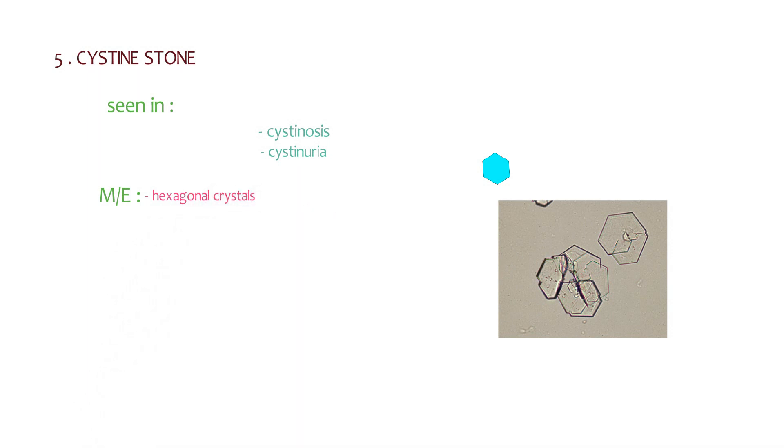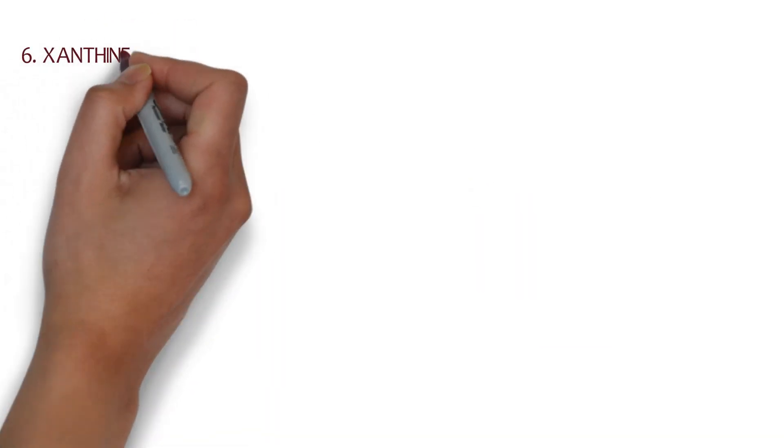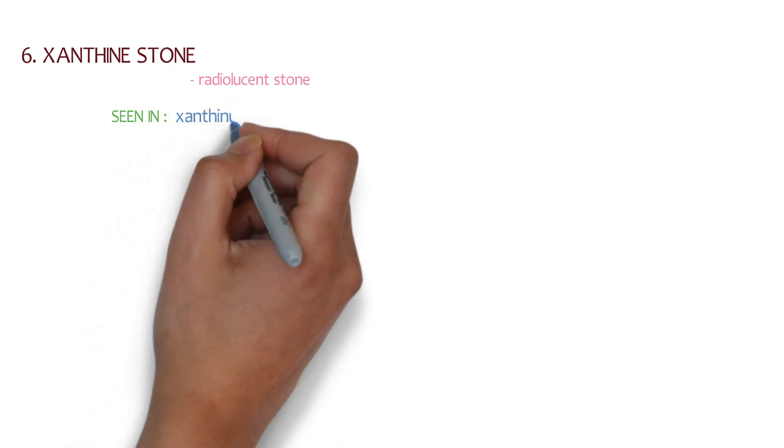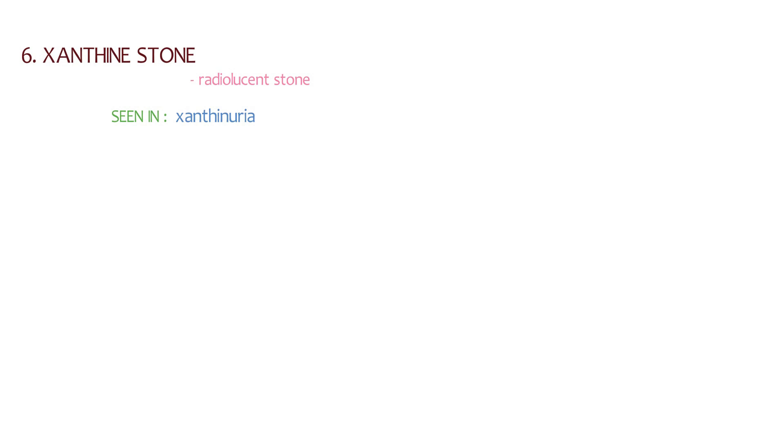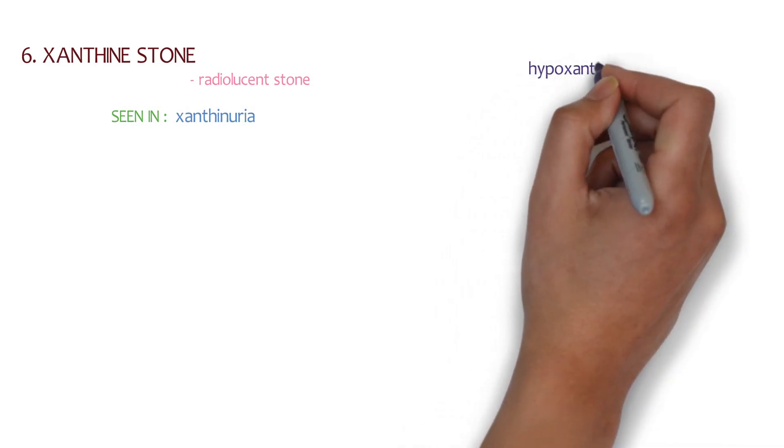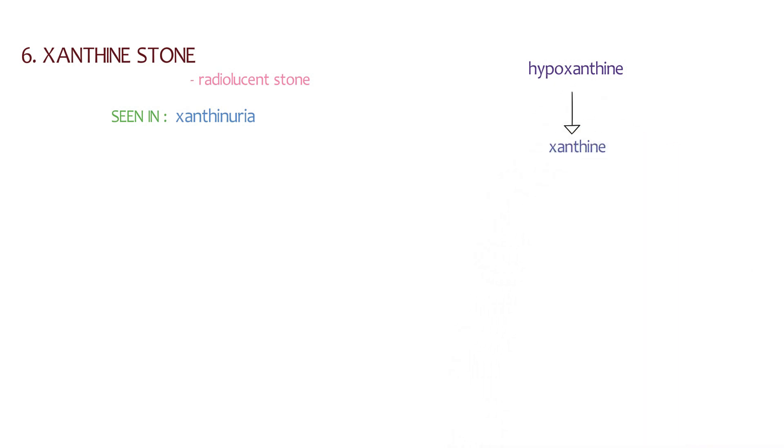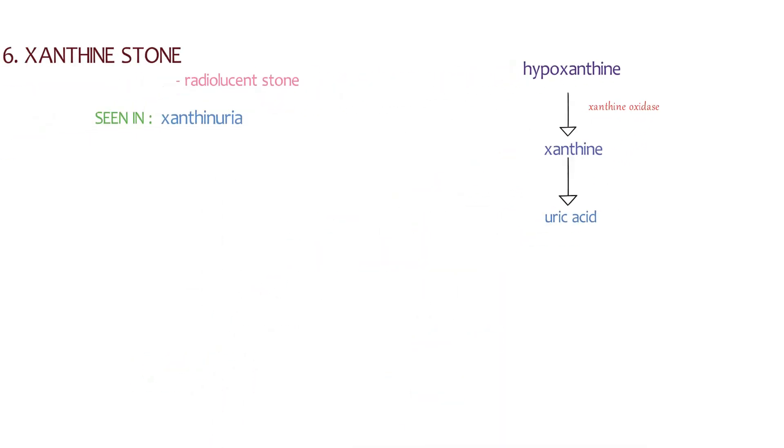The sixth and last stone that we are going to study, which is important, is xanthine stone. These are made up of xanthine and are also radiolucent in nature, just like uric stones. Xanthinuria, also known as xanthine oxidase deficiency, is a rare genetic disorder causing accumulation of xanthine. Basically, hypoxanthine is oxidized to xanthine, and xanthine is oxidized to uric acid. This oxidation is caused by xanthine oxidase, and due to the deficiency of this xanthine oxidase, there is accumulation of xanthine.